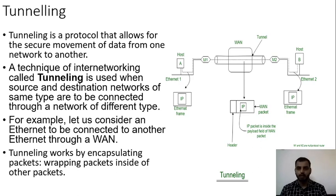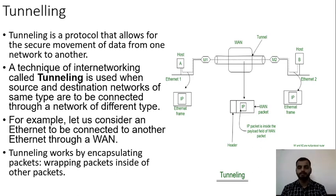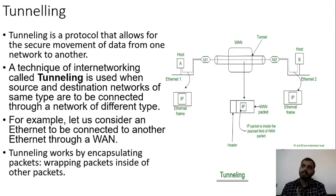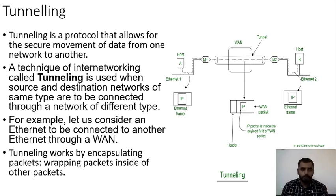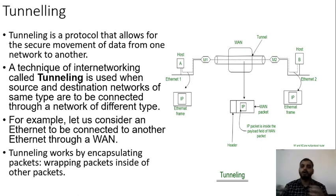What actually is tunneling? Tunneling is a protocol — a set of rules or instructions — that allows for the secure movement of data or packets from one network to another network. When talking about computer networks, it is always about sender, receiver, and the medium by which data is sent. Tunneling is the process in which data is transferred from one system to another through a secure channel.